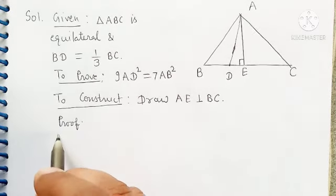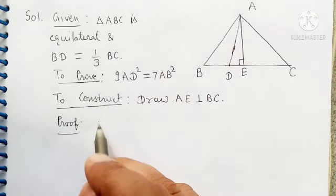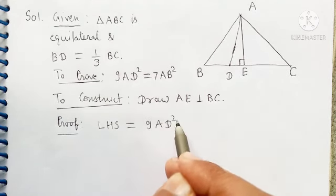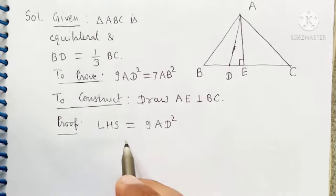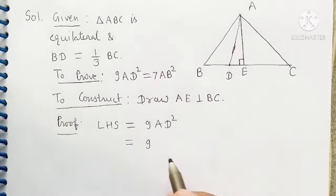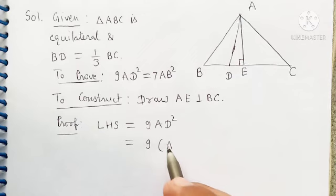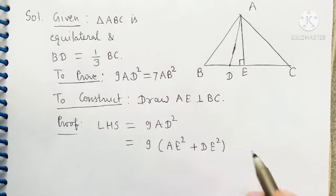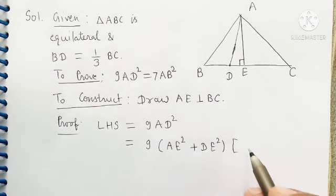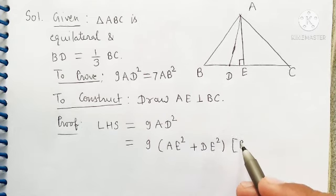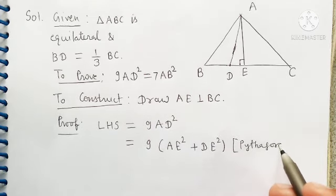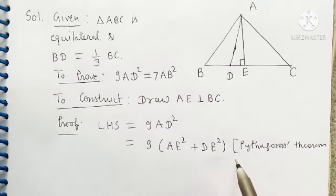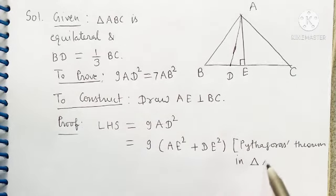Proof. Let us start with LHS. Here LHS is 9AD square. Now we can write AD square as AE square plus DE square. Rule or reason is Pythagoras theorem in right triangle AED.